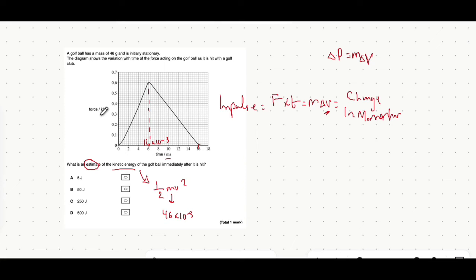The height of this triangle is... Well it's in kilonewtons and not only that it's 0.6. So that's 600 newtons to use in calculation.